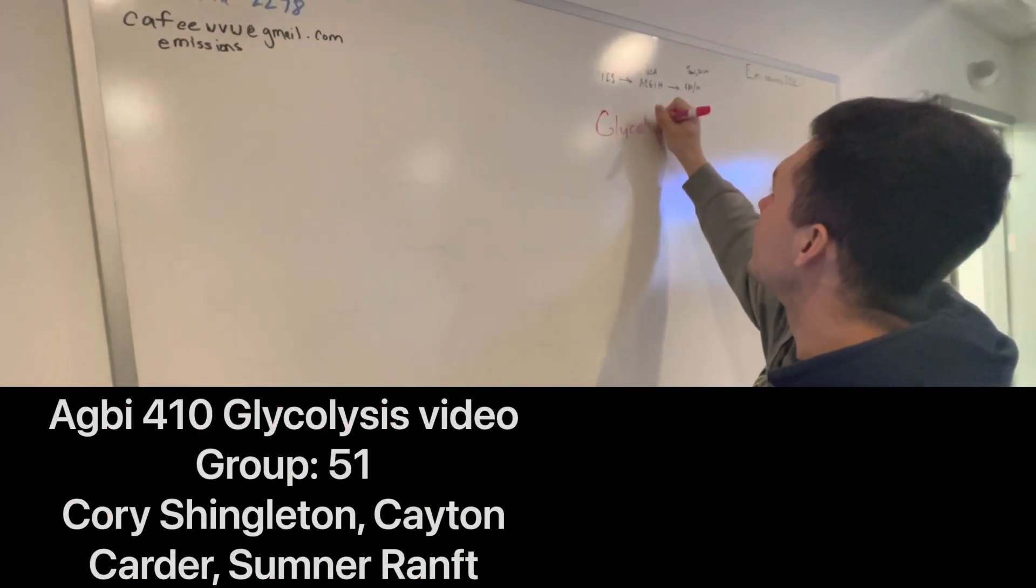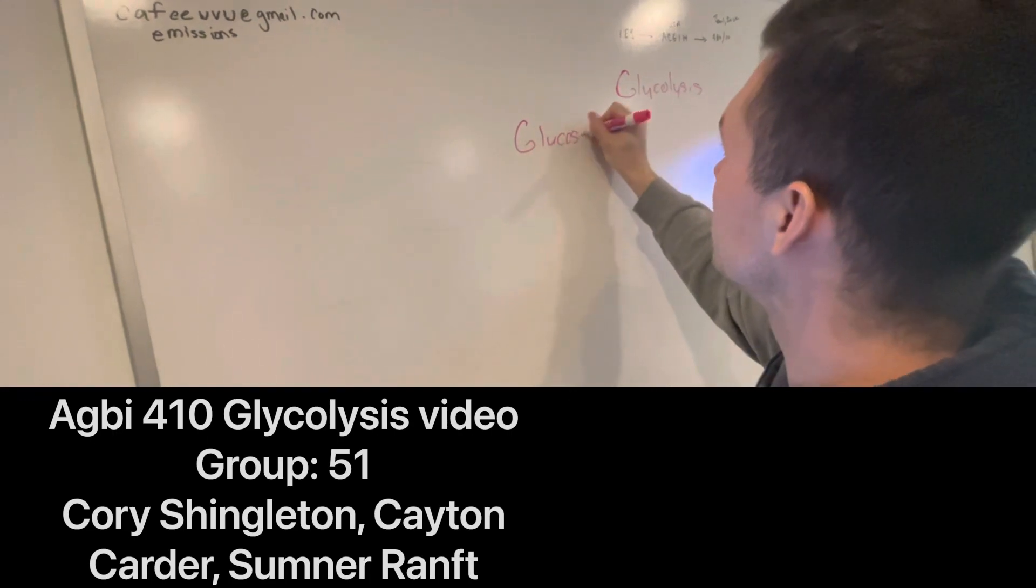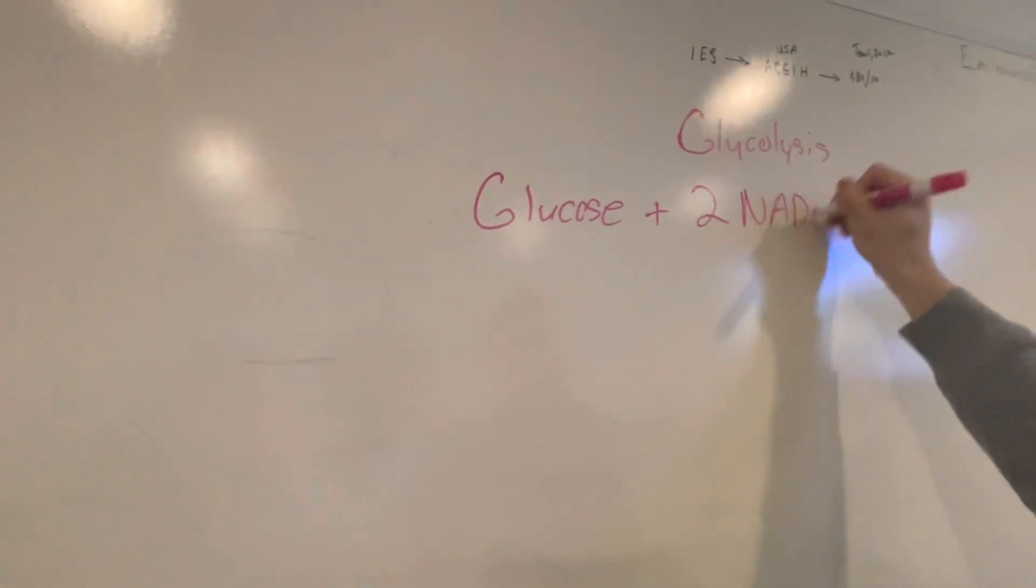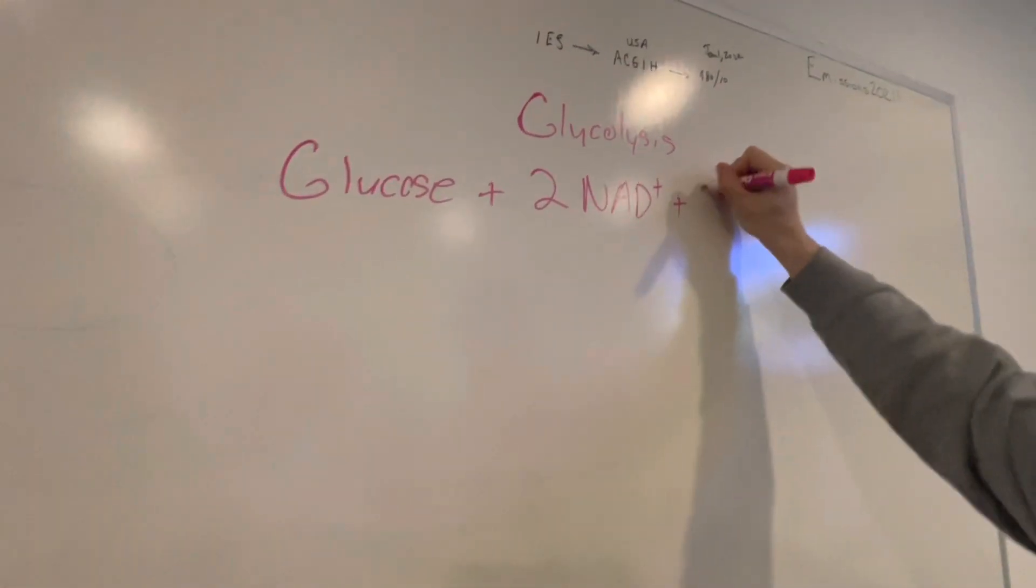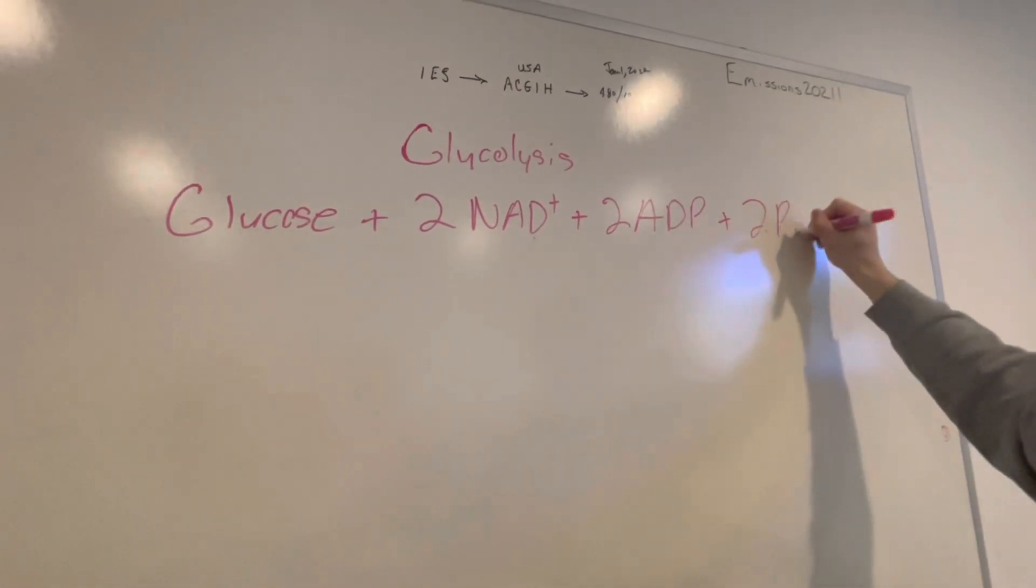Let's start off with glycolysis. We have to start with glucose, and then with glucose, we get 2 NAD+ plus 2 ADP and plus 2 Pi.